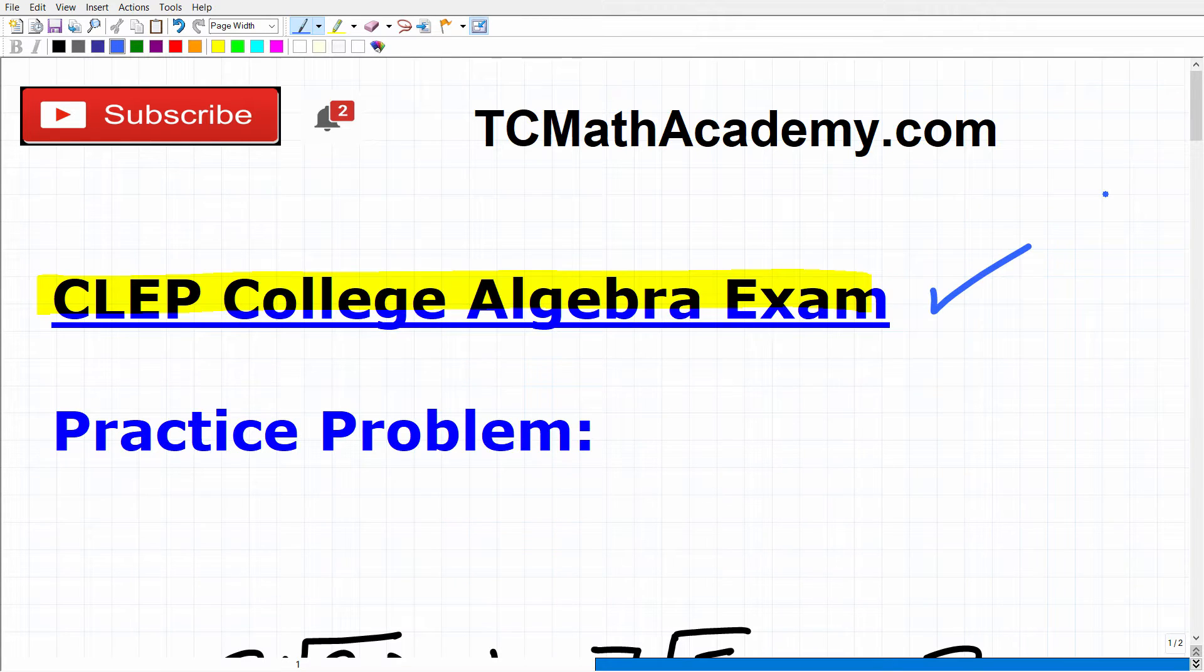If you can pass this exam, you're going to get college credits for college algebra in most colleges and universities, saving you time and money. And if you have taken at least Algebra 2 in high school, you definitely should try to pass the CLEP College Algebra exam.